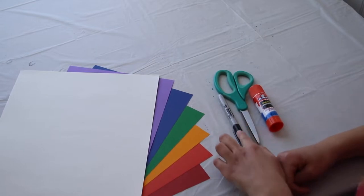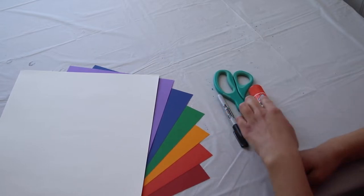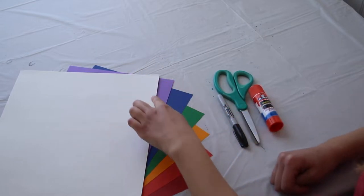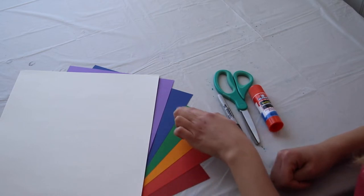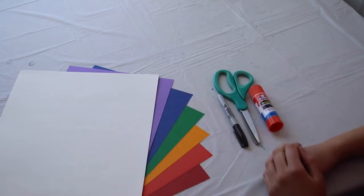For this craft, you're going to need a Sharpie marker, a pair of scissors, a glue stick, and then a bunch of sheets of paper. You're going to want one with every color of the rainbow as well as a white piece of paper.